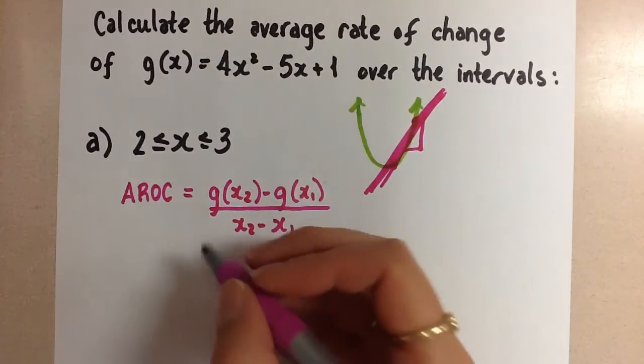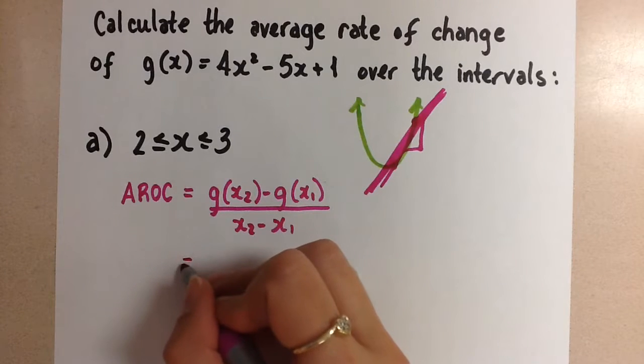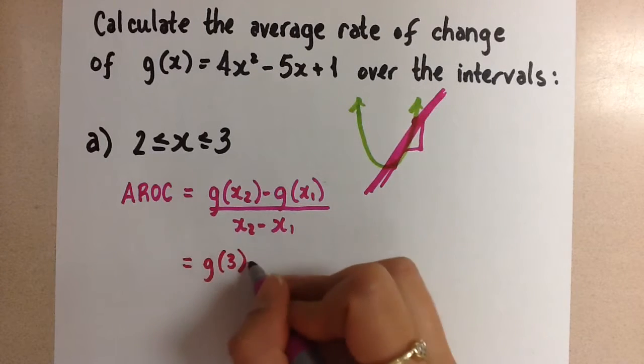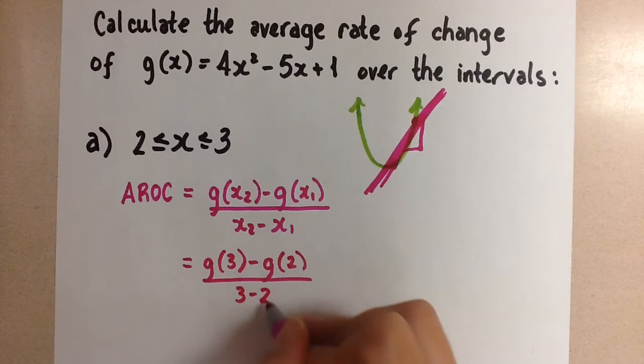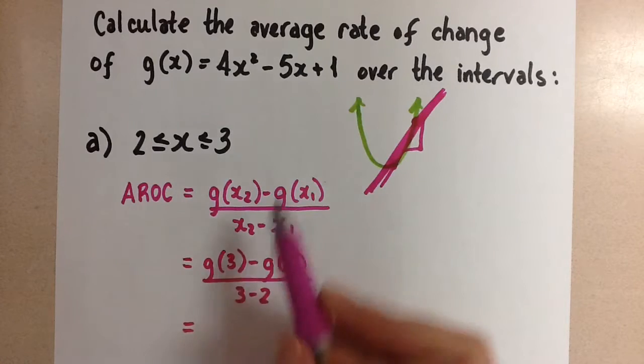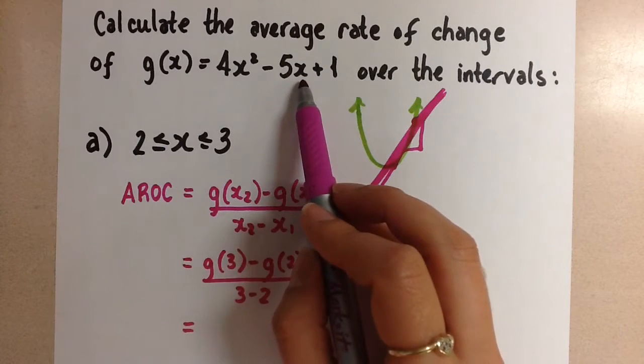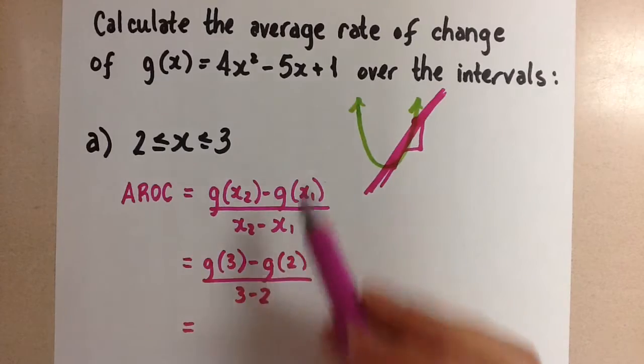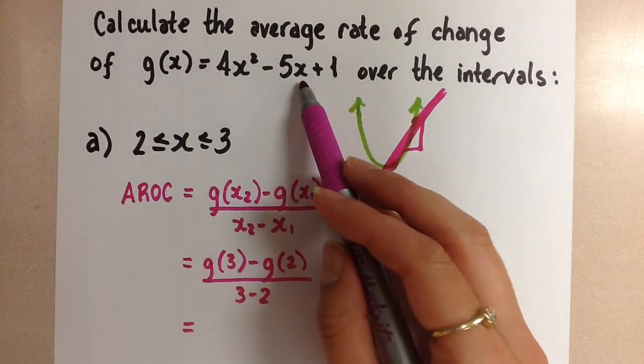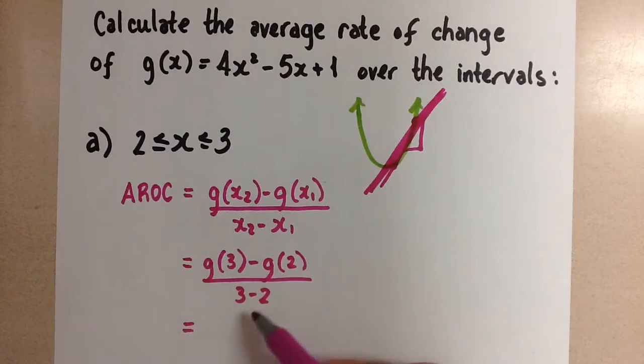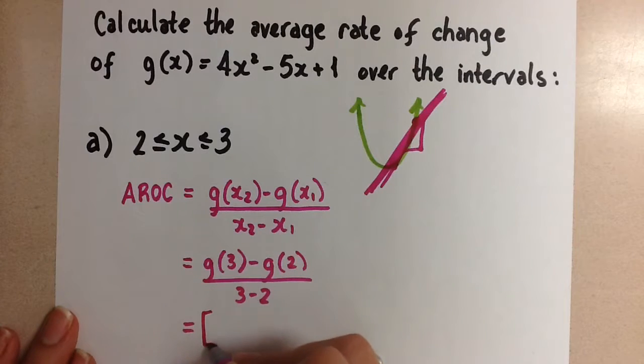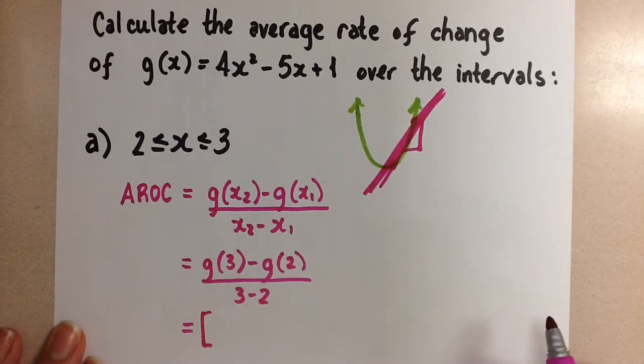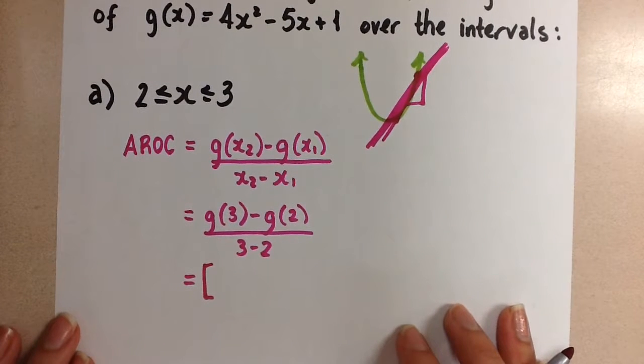So let's use this and sub in the values that we have. We're going to do g(3) minus g(2) over 3 minus 2. So this means we take 3 and sub it in for x in the original function and get that value. Then we take 2 and sub it in for x in the original function and get that value, and we subtract them and subtract the x values in the denominator and then divide. So let's fill it in. I'm going to fill it in within the formula, but if you feel more comfortable doing it outside of the formula that is equivalent.